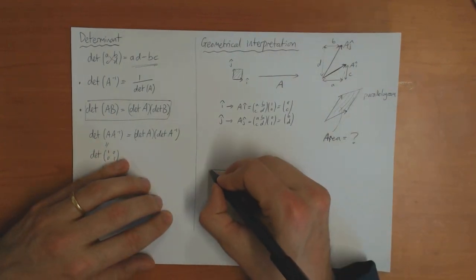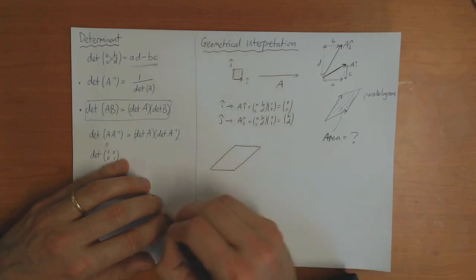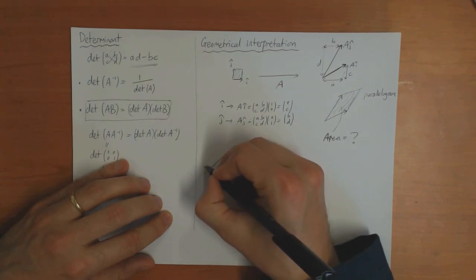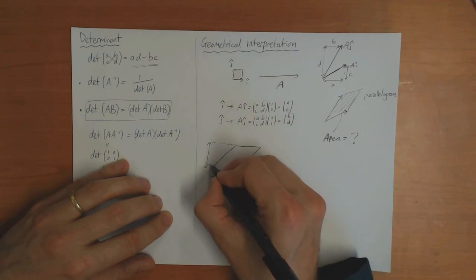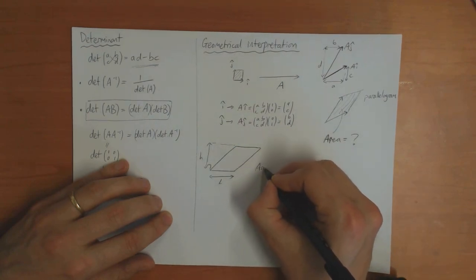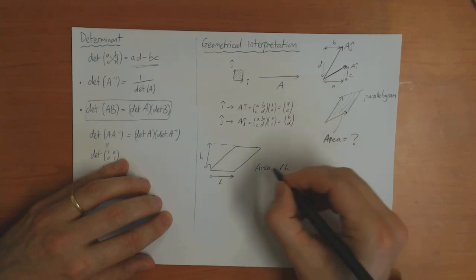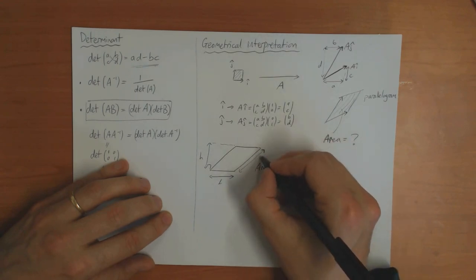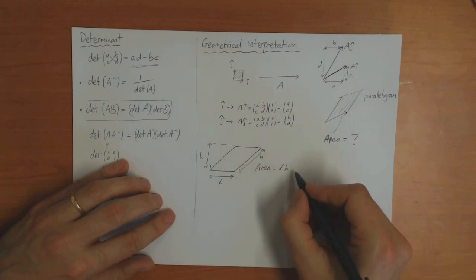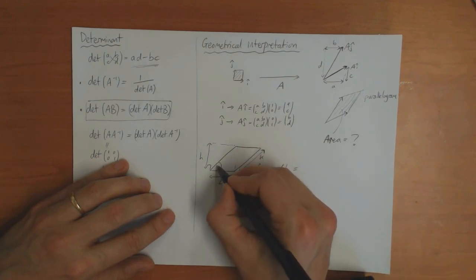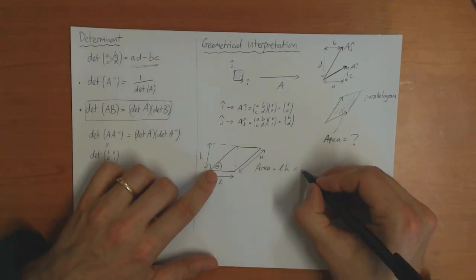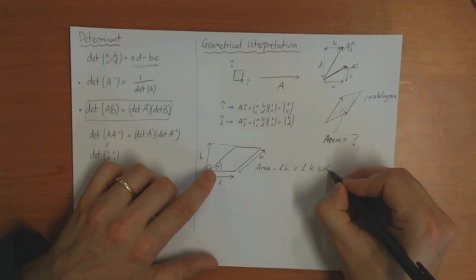We can work this out in the following way. The area of this parallelogram is equal to this length L times the perpendicular height H. If I call this other length K, and if this angle is theta, then H equals K sine theta, so the area equals L times K times sine theta.